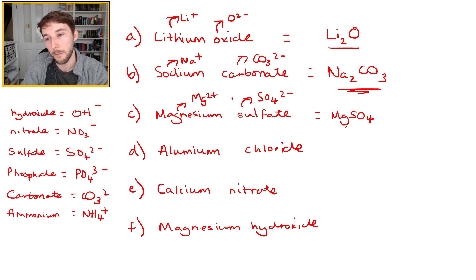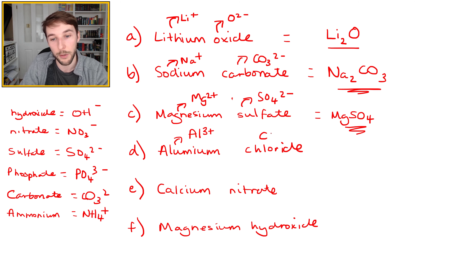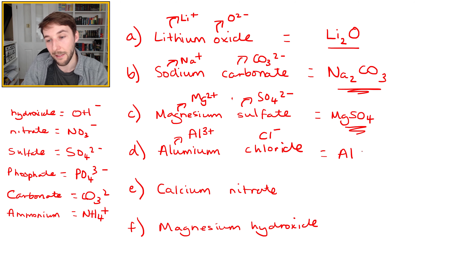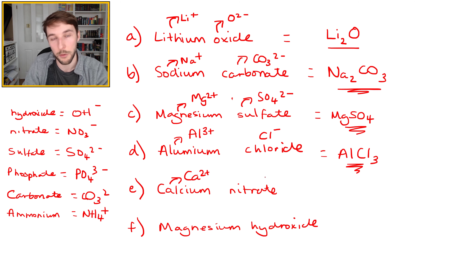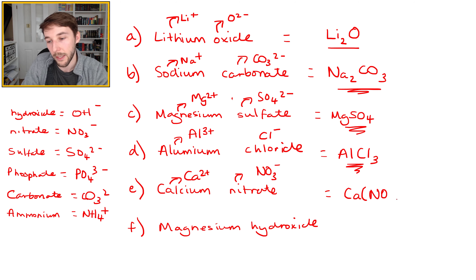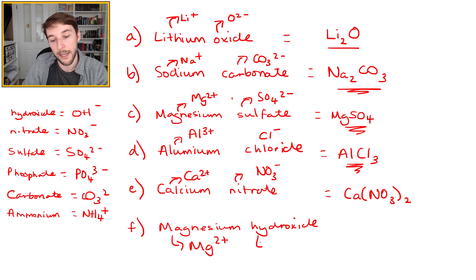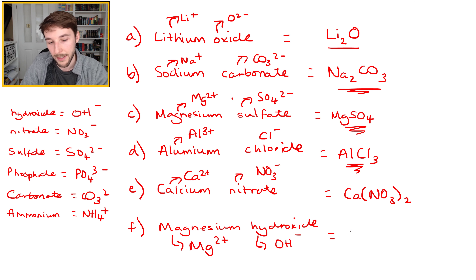Aluminium chloride: aluminium is 3+, chloride is 1−; both fit into 3, so the formula is AlCl3. Calcium nitrate: calcium is 2+, nitrate is NO3− with 1−; we need two nitrates per calcium, giving Ca(NO3)2. Magnesium hydroxide: magnesium is 2+, hydroxide is 1−; two hydroxides per magnesium, and because hydroxide is a compound ion it gets bracketed, giving Mg(OH)2.